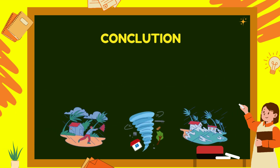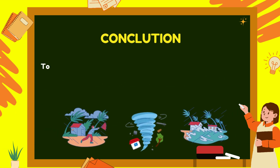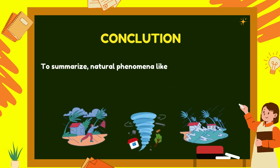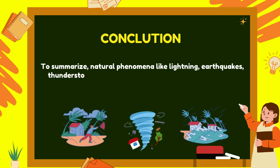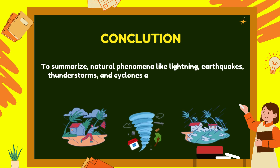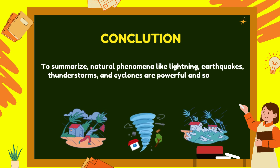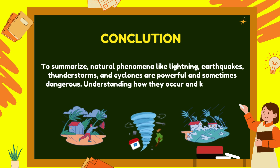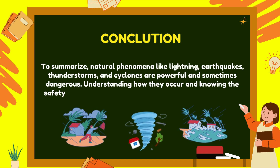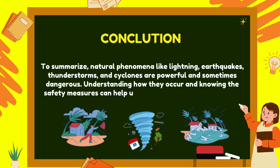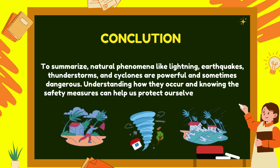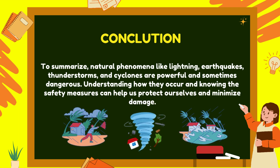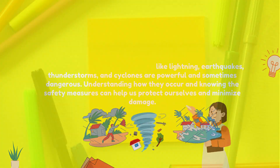To summarize, natural phenomena like lightning, earthquakes, thunderstorms, and cyclones are powerful and sometimes dangerous. Understanding how they occur and knowing the safety measures can help us protect ourselves and minimize damage.